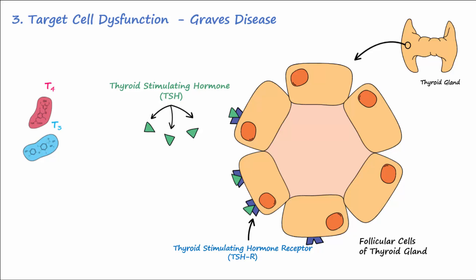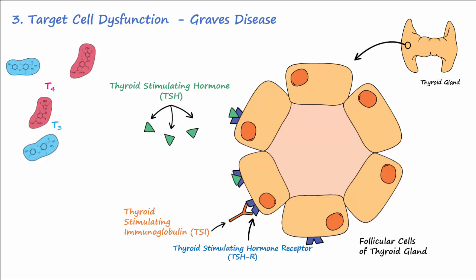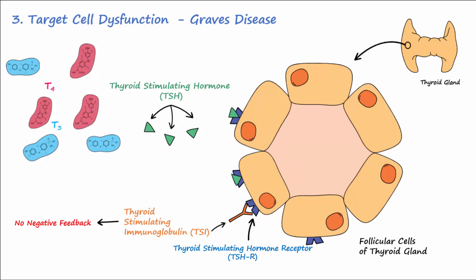Graves' disease results when the body mistakenly produces autoantibodies called thyroid-stimulating immunoglobulins, or TSI, that bind to TSH receptors and activate them to cause an increase in the production of T3 and T4. TSI, however, is not subject to negative feedback, so TSI causes the thyroid gland to continually produce thyroid hormones, resulting in hyperthyroidism.